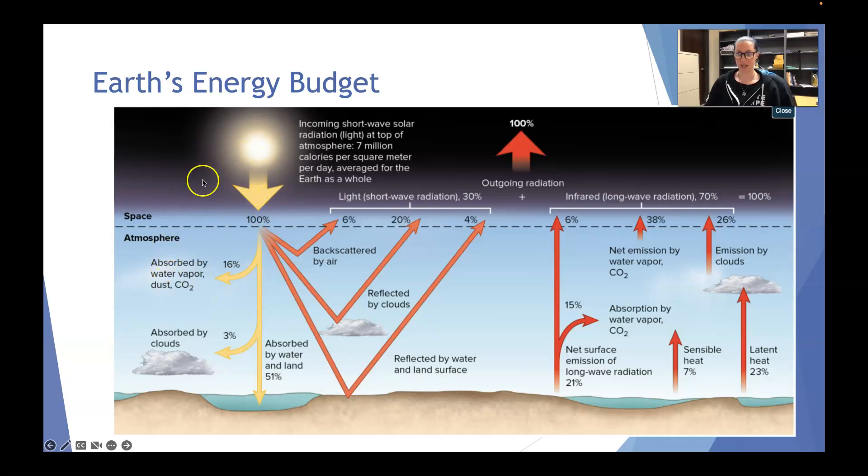So like when light is coming through the surface, through our atmosphere, some of it's absorbed by water vapor dust and CO2. Some of it's absorbed by clouds or absorbed by water and land. So 51% of what's coming in is transmitting through the atmosphere and going straight to the land and then being absorbed by the land in this particular schematic. Whereas a lot of it is backscattered or reflected, right? So by either backscattered straight by the air, reflected by the clouds or reflected by water and land surface.